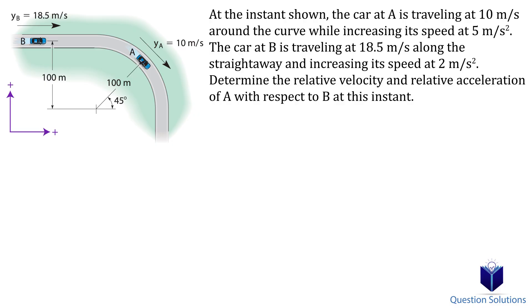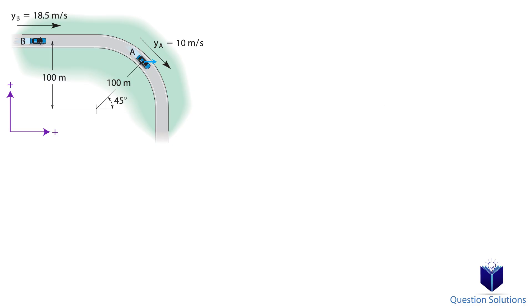So for car A, we can break down the velocity into x and y components. For the x component we have 10 cos 45 degrees and for the y component we have negative 10 sine 45 degrees. Let's simplify them.